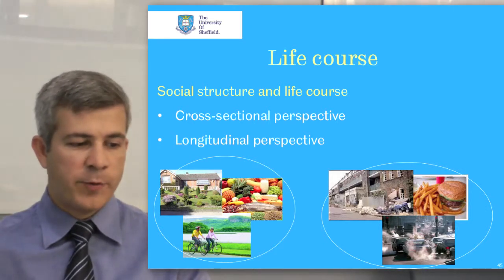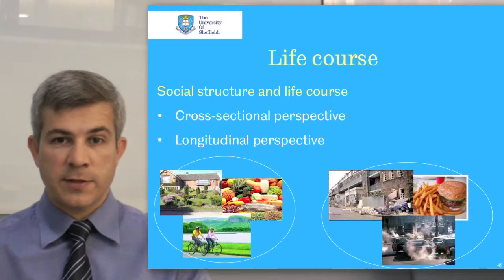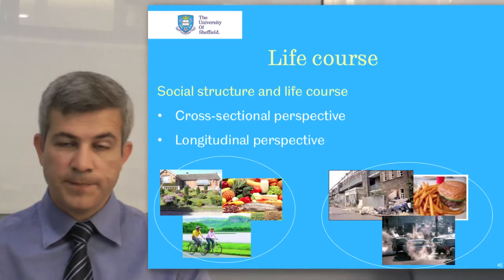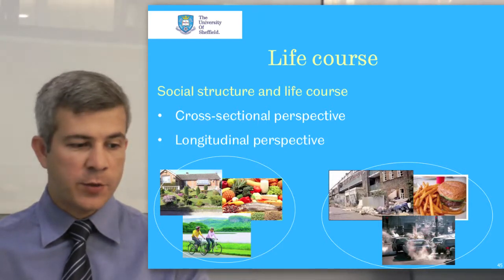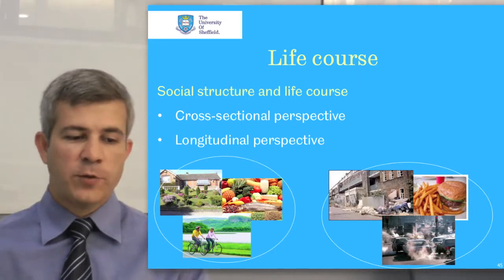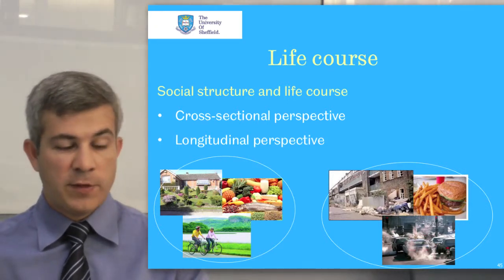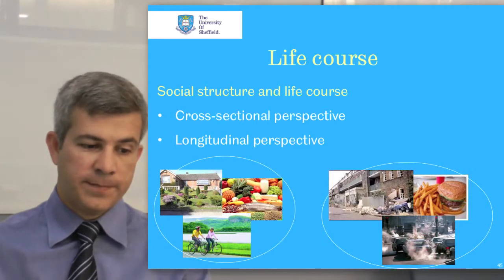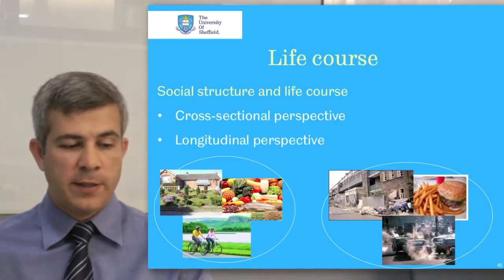For example, a child raised in an affluent home is likely to succeed educationally, which will favor entry to a more privileged sector of the labor market, where an occupational pension scheme will provide financial security in older age. At the other extreme, a child from a disadvantaged home is likely to achieve few educational qualifications, leave school early, enter the unskilled labor market, and face low-paid and hazardous work combined with no occupational pension.